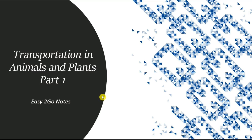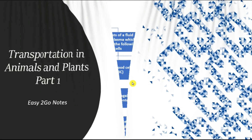Hello everyone, welcome back to US2Knotes, the place with the perfect science lessons. Today I'm here with the first part of the chapter, Transportation in Plants and Animals. In today's chapter, we'll be discussing the flow of substances through the body in different organisms and what is the need of this flow. Let's begin.